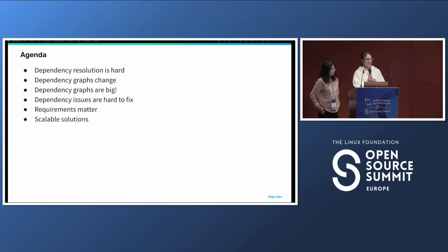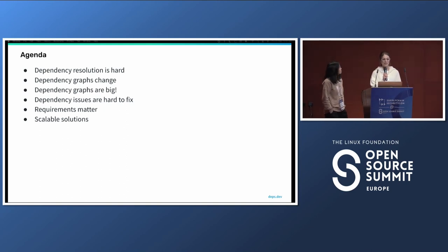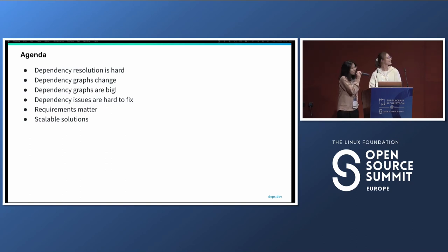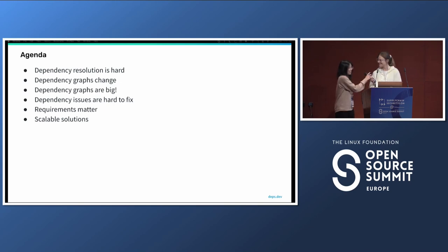Open source continues to grow in almost every way. There are more packages, critical projects, and attacks happening in the open source supply chain than ever before. An integral part of preventing future attacks is dependency management. In this talk, we're going to highlight some of the ways that dependency management has changed in our time working on the GHOST team. The things we learned include that resolving dependencies is a difficult problem, that dependency graphs can be quite big, that they can change quite a lot from day to day, that issues in indirect dependencies are much harder to fix than issues in direct dependencies, that how you specify your dependency requirements can both cause and solve issues, and finally that effective dependency management requires scalable solutions.